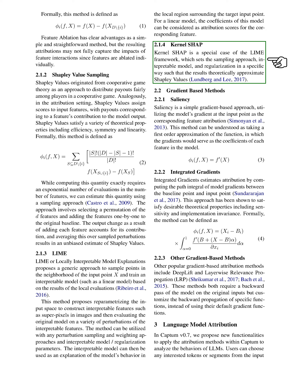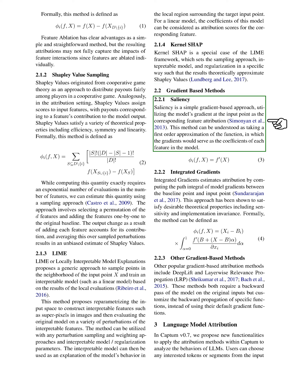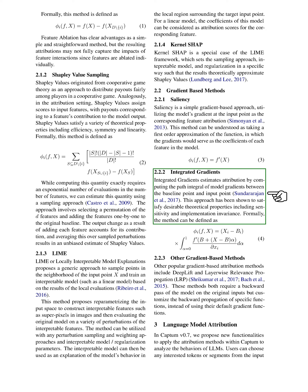Kernel-SHAP is a unique version of the LIME framework designed to theoretically approximate Shapley values, by setting the sampling approach, interpretable model, and regularization in a specific manner. Saliency is a straightforward gradient-based method that uses the model's gradient at the input point as the corresponding feature attribution — essentially a first-order approximation where gradients act as coefficients of each feature. Integrated gradients estimates attribution by calculating the path integral of model gradients between the baseline point and input point, and has been proven to have desirable theoretical properties including sensitivity and implementation invariance.